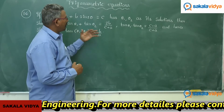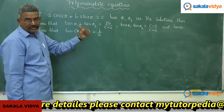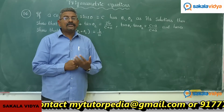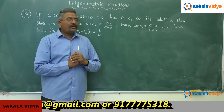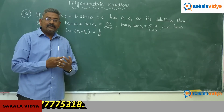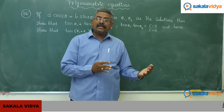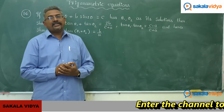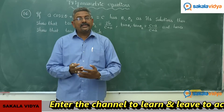If you observe this problem, it has cos2θ and sin2θ, but we have to find tan θ₁ + tan θ₂ as well as tan θ₁ · tan θ₂. So in order to find these two values, we need to change cos2θ and sin2θ in terms of tan. Then there is a possibility of getting a quadratic equation in terms of tan θ, since θ has two solutions θ₁ and θ₂. If we get a quadratic equation in terms of tan θ, the roots obviously become tan θ₁ and tan θ₂.